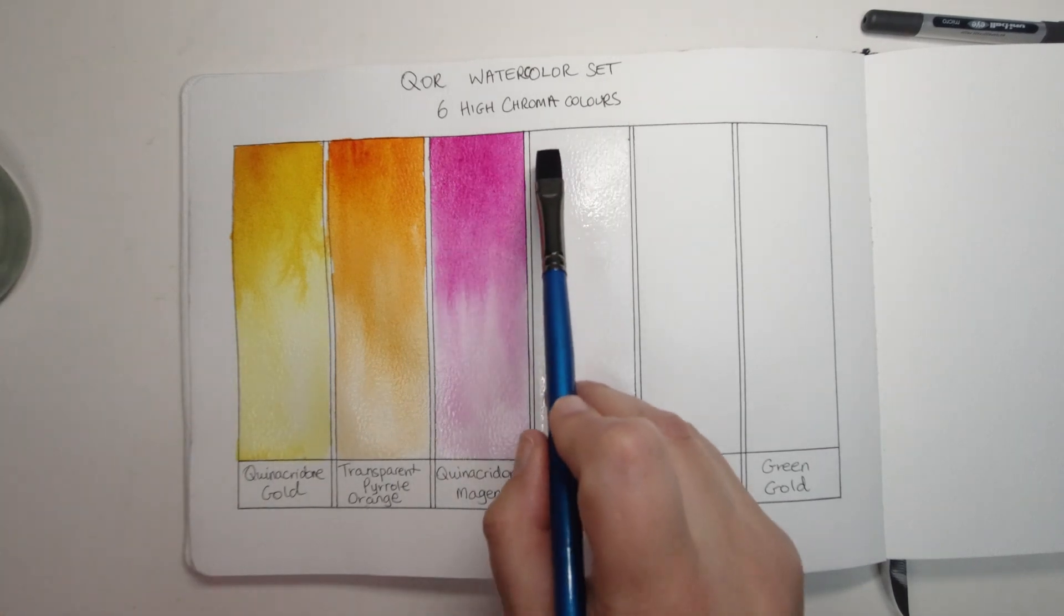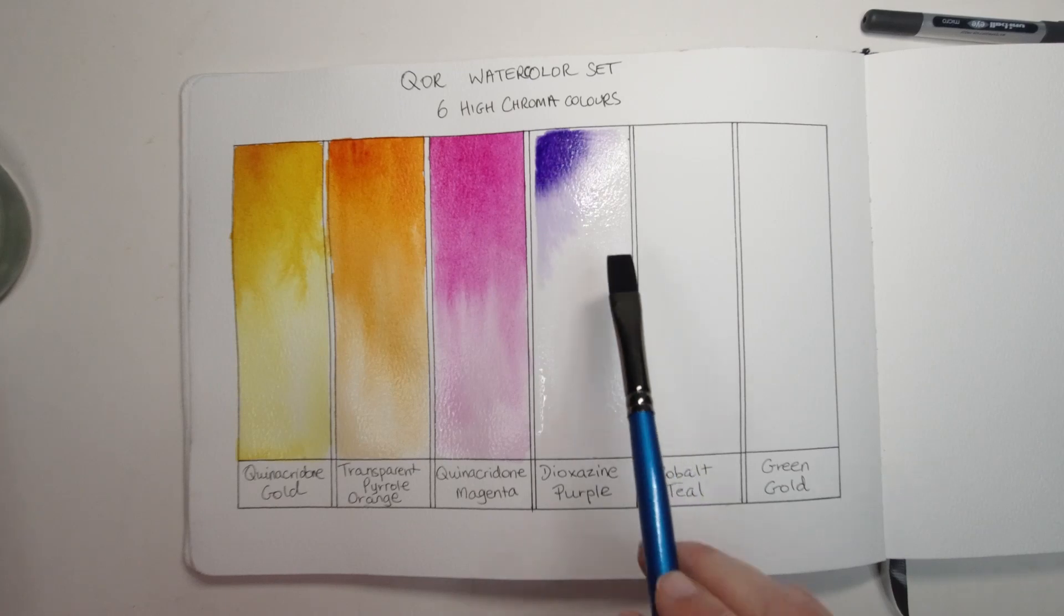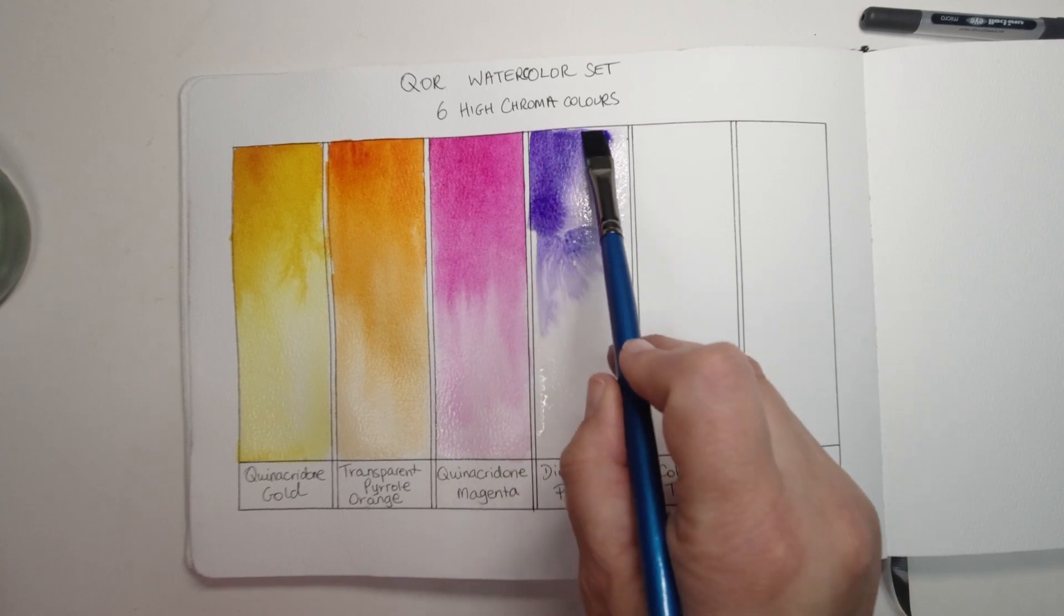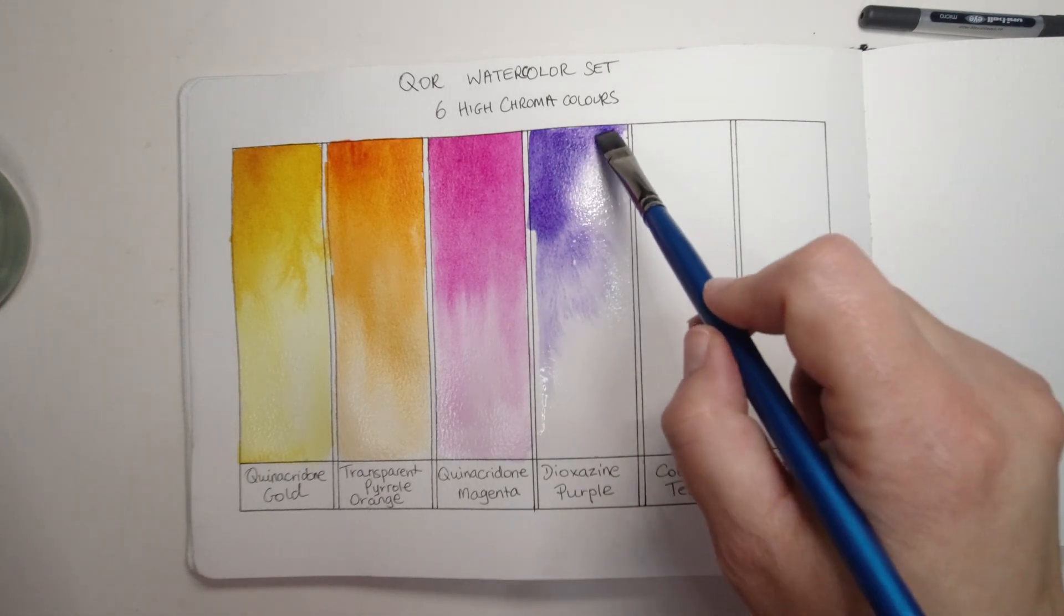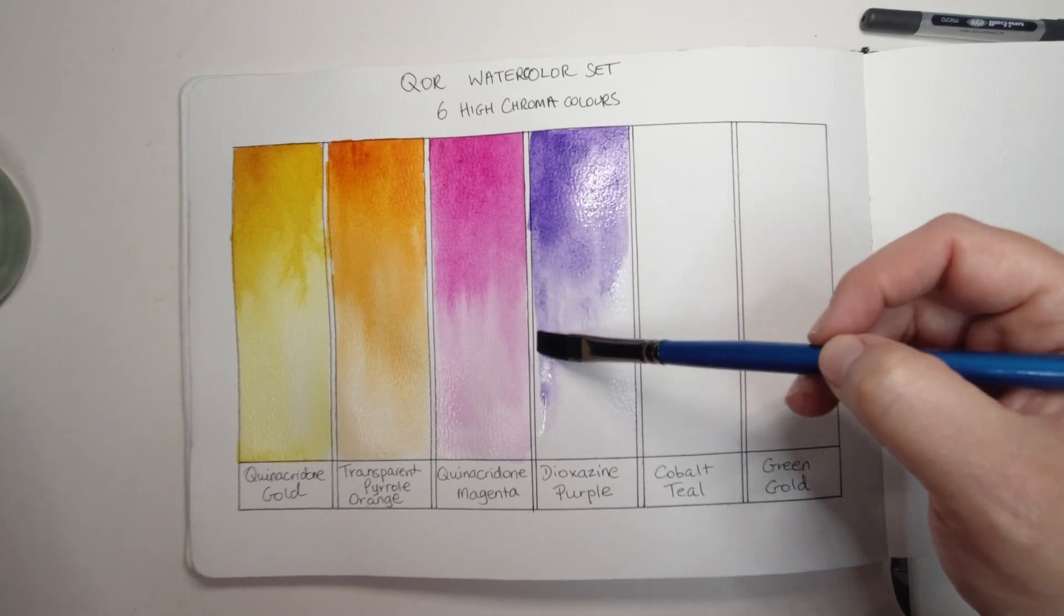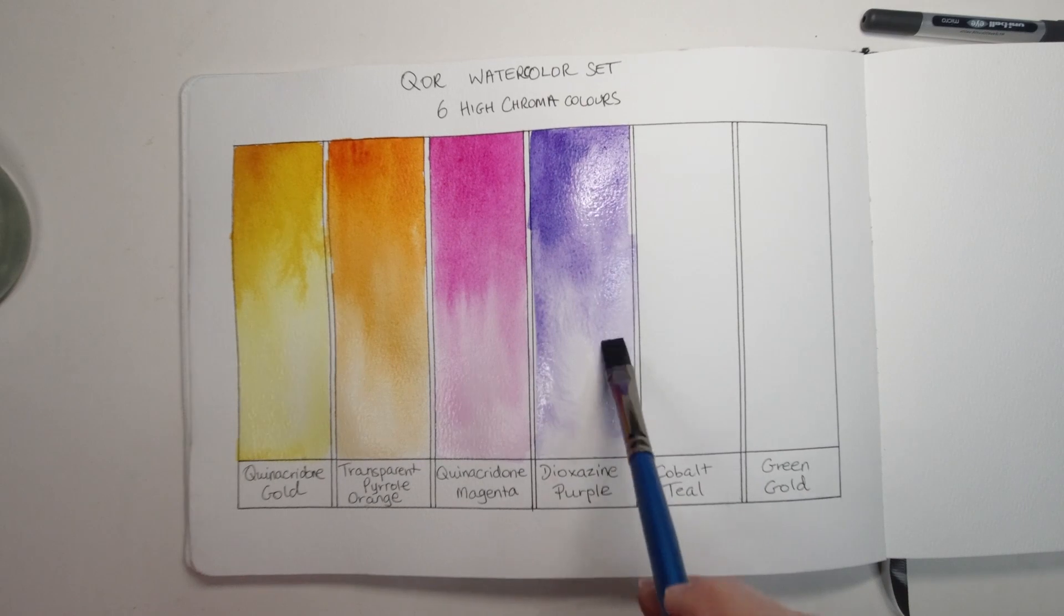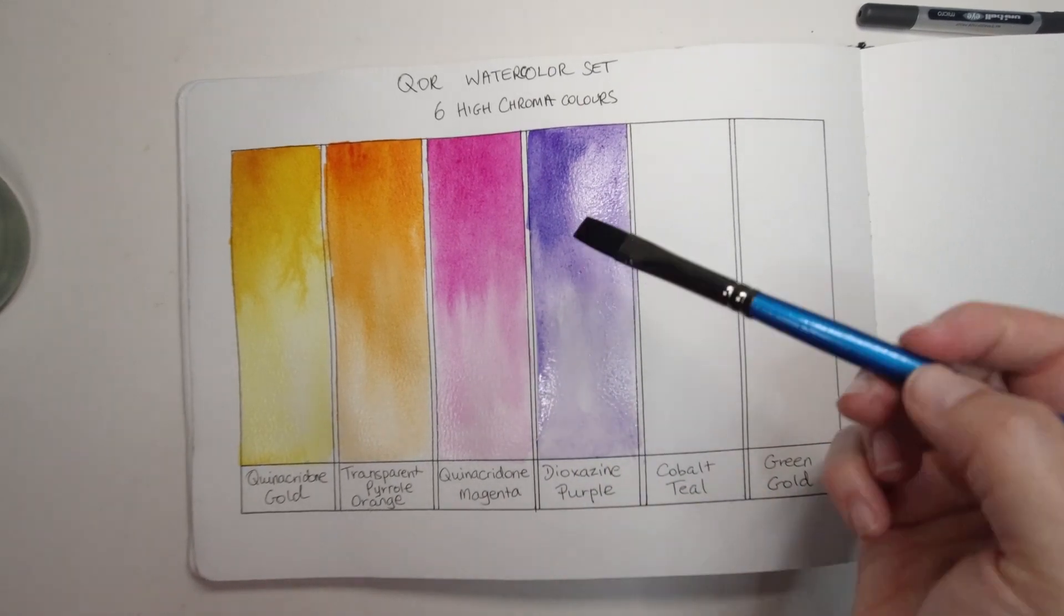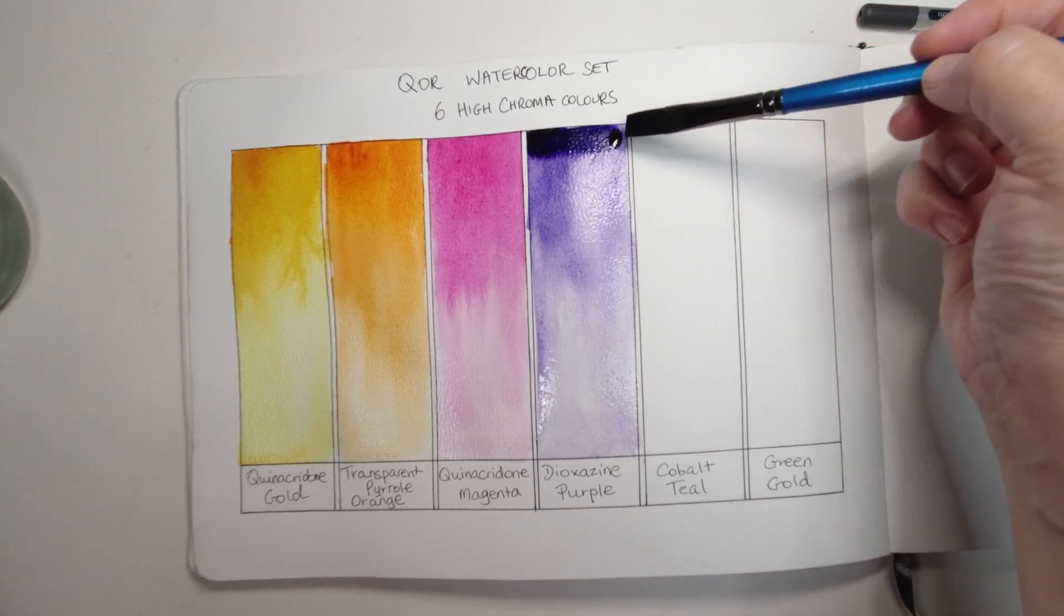Onwards to our next one and look at it go, that is really crazy. That is the dioxazine purple in pigment PV23, it's a series 3 and has an excellent light fast rating. It's also mostly transparent and very staining. I'm just painting it as lightly as I possibly can just so you can kind of see how dark it gets when I put this next layer on.